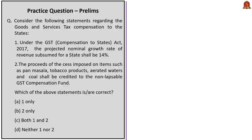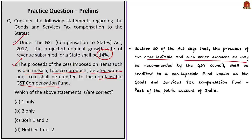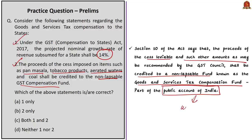Question three: consider the following statements regarding GST compensation to states. Statement one says under the GST Compensation to States Act of 2017, the projected nominal growth rate of revenue for a state shall be 14 percent — this is correct. Statement two says the proceeds of the cess imposed on items such as pan masala, tobacco products, aerated waters, and coal shall be credited to the non-lapsable GST Compensation Fund — this is also correct, as the Act says proceeds of the cess, plus such other amounts as recommended by the GST Council, shall be credited to the GST Compensation Fund, which is part of the Public Account of India. Find out under which article the Public Account of India is set up and post the answer in the comment section. The correct answer is option C: both one and two.